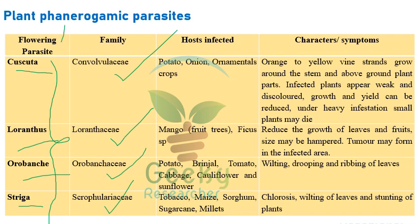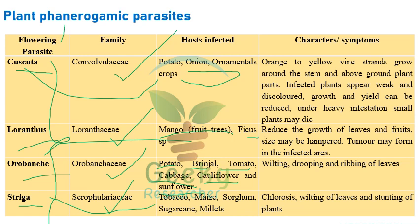Cascuta generally infects crops like potato, onion, and ornamental crops. Loranthus is mainly observed in mango, fruit trees, and Ficus species. Potato, brinjal, tomato, cabbage, cauliflower, and sunflower act as hosts for Warabanki. Tobacco, maize, sorghum, sugarcane, and millets are the hosts infected by Striga.